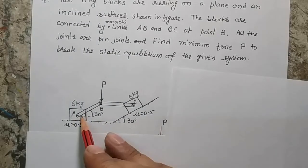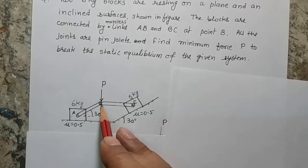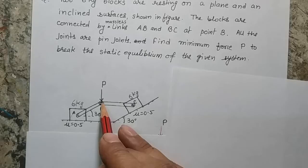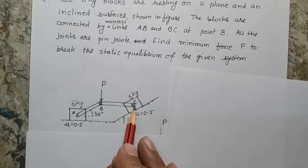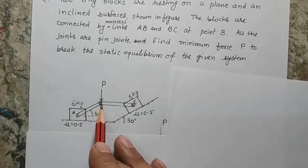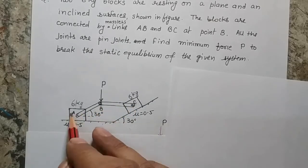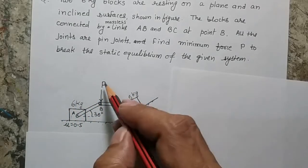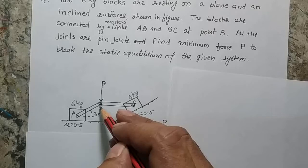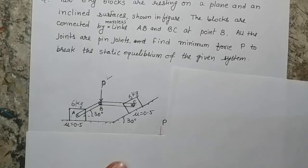The two blocks are connected through links. A, B and C are the two links, so AB and BC are links having pin joints at all positions — joints A, B, and C are pin joints. The system is configured in this position, and we are applying a force P at joint B. The question is: what should be the minimum value of P to disturb the equilibrium?